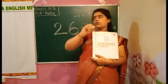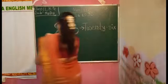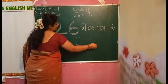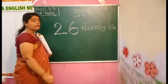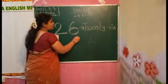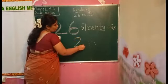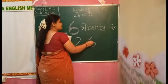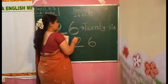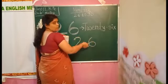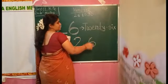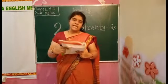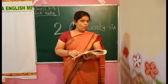Like this they are given. When you are tracing the number 2, you have to say 2. When you are tracing the number 6, you have to say 6. After finishing the number 2, you have to say 26. Like this we have to trace.